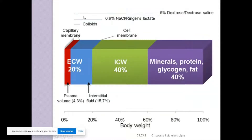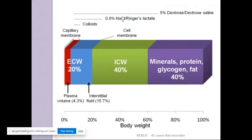Something very important: when giving intravenous fluids, if you give colloids, they will distribute only in the plasma. If you give 0.9% saline or Ringer's lactate — what we classically call crystalloids — it will go up to the extracellular compartment. Whereas if you give dextrose or dextrose saline, it will distribute right across because the cells need dextrose and will use it up.